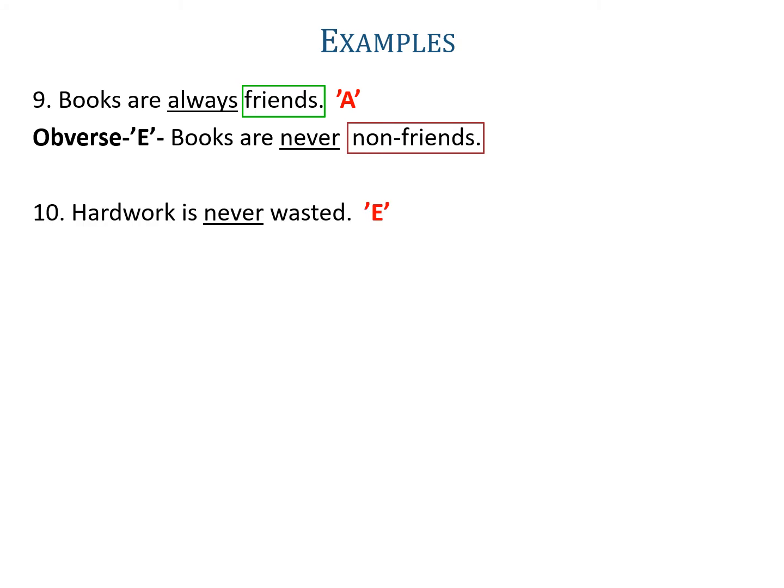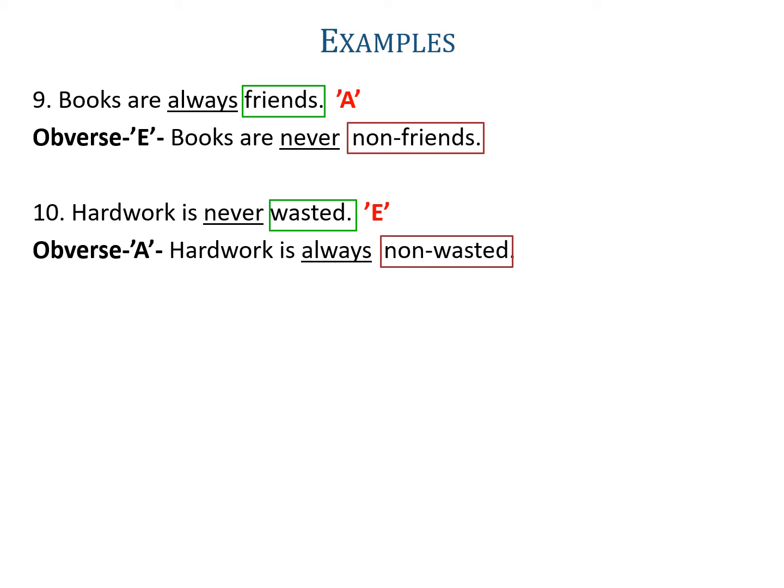Example ten: 'Hard work is never wasted.' Never is used in the proposition, so it is an E-proposition. Its obverse is A, and never becomes always. The predicate here is wasted, so its complementary will be non-wasted. So the obverse is 'hard work is always non-wasted'.